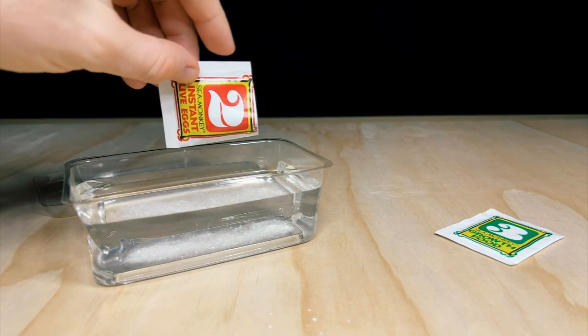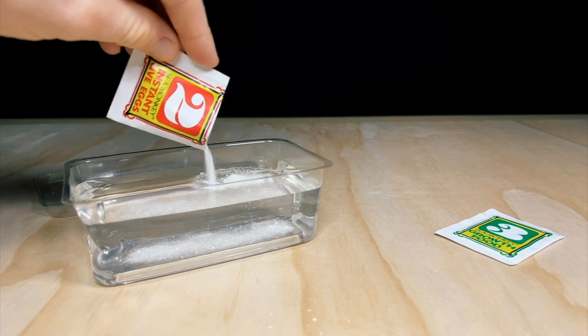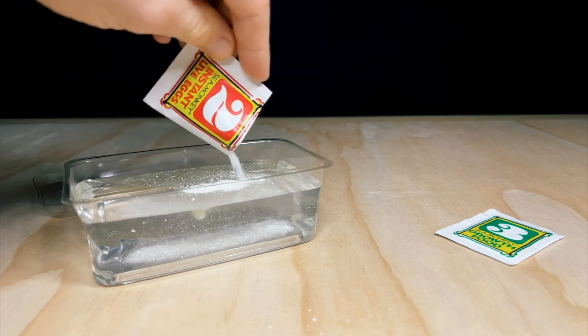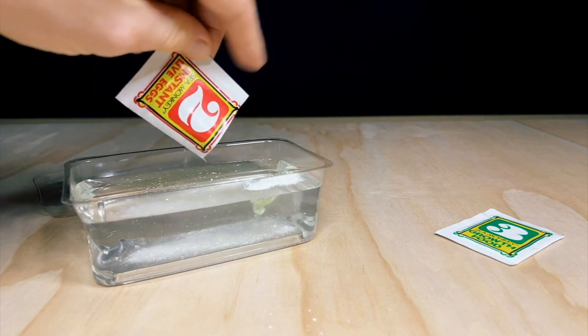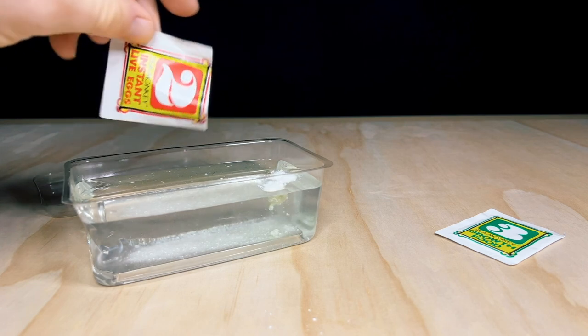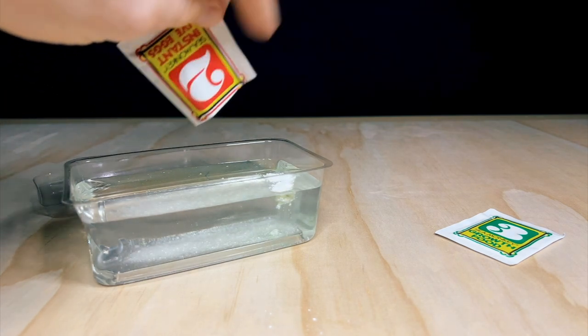Next up is the second packet, the instant live sea monkey eggs. I've had a look at the contents of this sachet under the microscope a few weeks ago, and I couldn't actually see any eggs in here. To me it looked mostly like salt with some small bits of green and orange food particles mixed in.